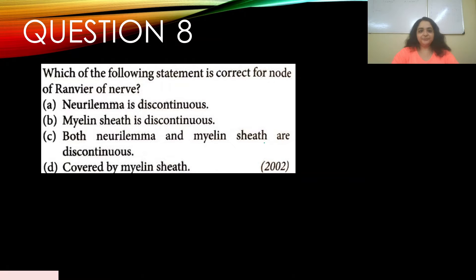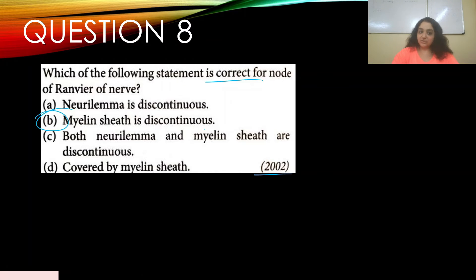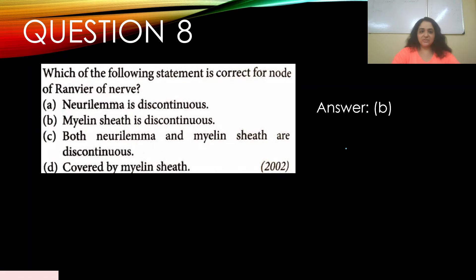Question number eight: Which of the following statements is correct for the node of Ranvier of a nerve — appeared in 2002? Options: a) neurilemma is discontinuous, b) myelin sheath is discontinuous, c) both neurilemma and myelin sheath are discontinuous, d) covered by myelin sheath. The correct answer is b) — myelin sheath is discontinuous.